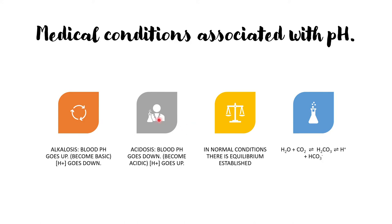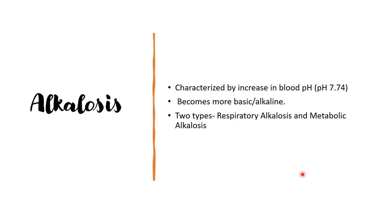There are medical conditions associated with pH, namely acidosis and alkalosis. In alkalosis the blood pH increases or the blood becomes more basic, and in acidosis the blood pH decreases or it becomes acidic. In normal conditions equilibrium is established, but when these conditions are disturbed they generate medical conditions like alkalosis and acidosis. Too much fluctuation in this equilibrium can result in death.